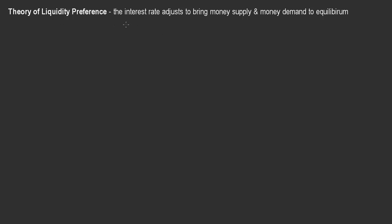This theory says that the interest rate adjusts to bring money supply and money demand into equilibrium. The terminology we'll be using: when we talk about interest rate, we've been using r. We're going to be talking about the money supply, marked as MS, and money demand, marked as MD, just to keep these things straight in our minds.